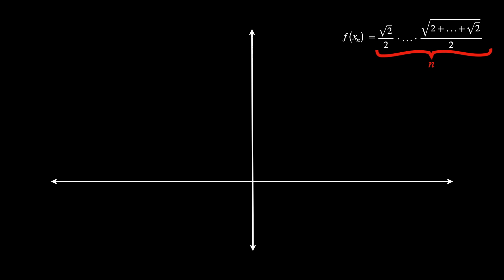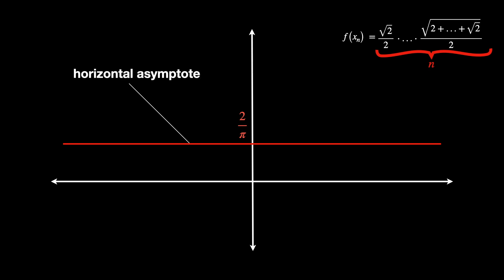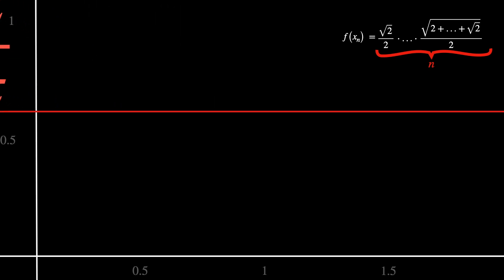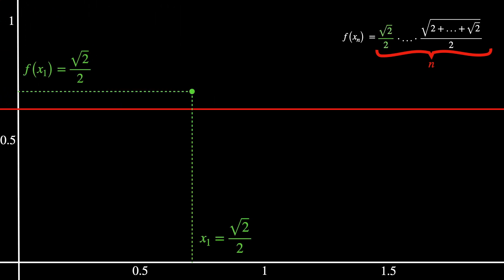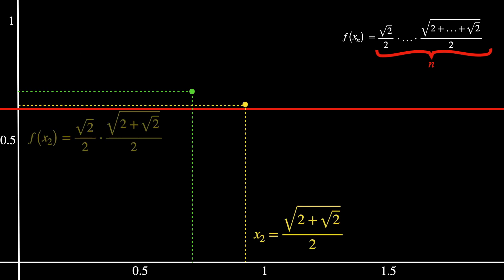Let us plot the graph. Since we want to approximate 2 over π, we draw the horizontal red line y = 2/π — this is called a horizontal asymptote, and our approximation must get closer and closer to it after each iteration. The first input x1 is just the square root of 2 divided by 2, and its output f(x1) is also the square root of 2 over 2, since the first term is not yet multiplied by anything. The next iteration has input x2, which is the square root of 2 plus the square root of 2, all over 2, and the output f(x2) is x2 multiplied by the previous term x1.